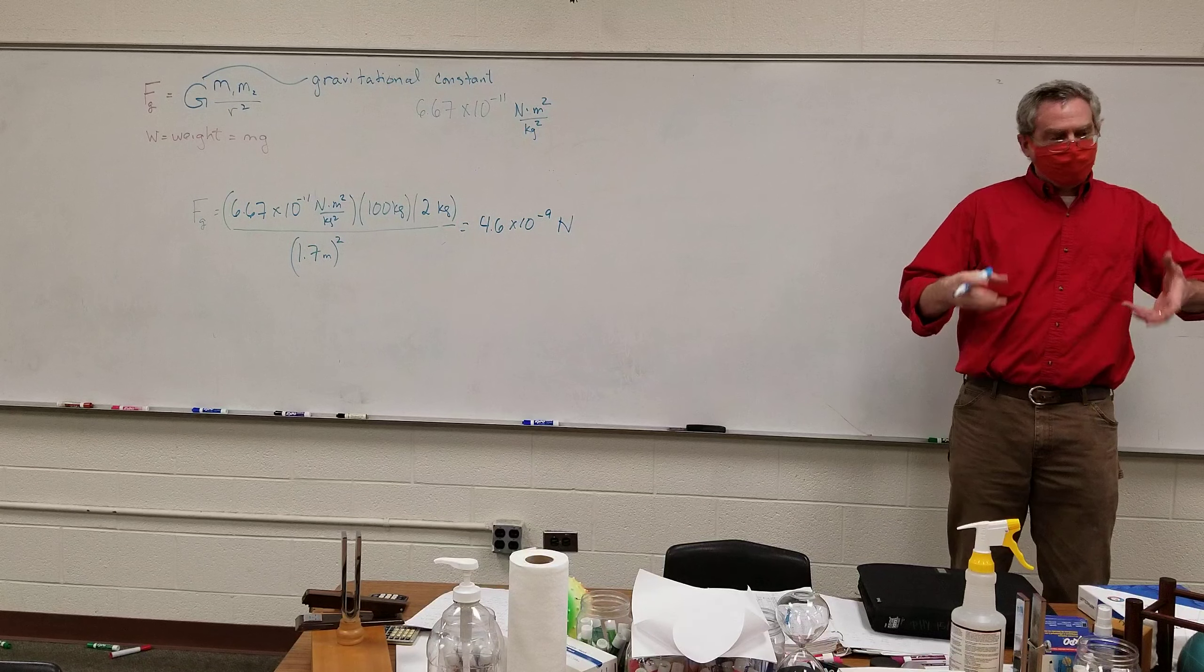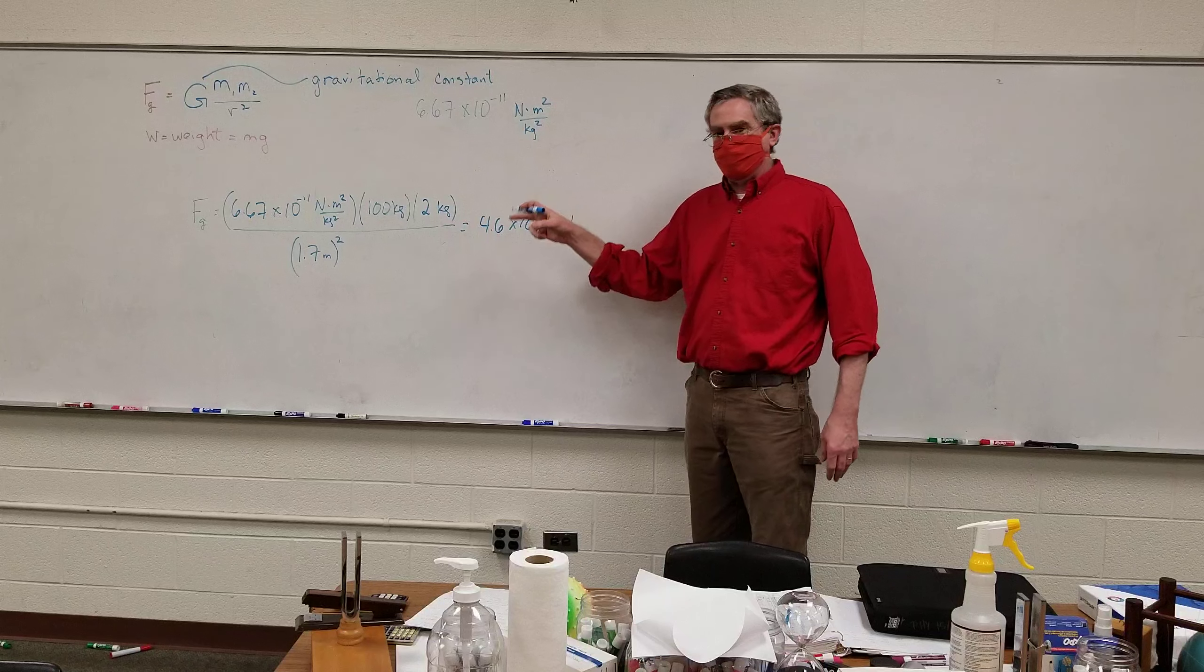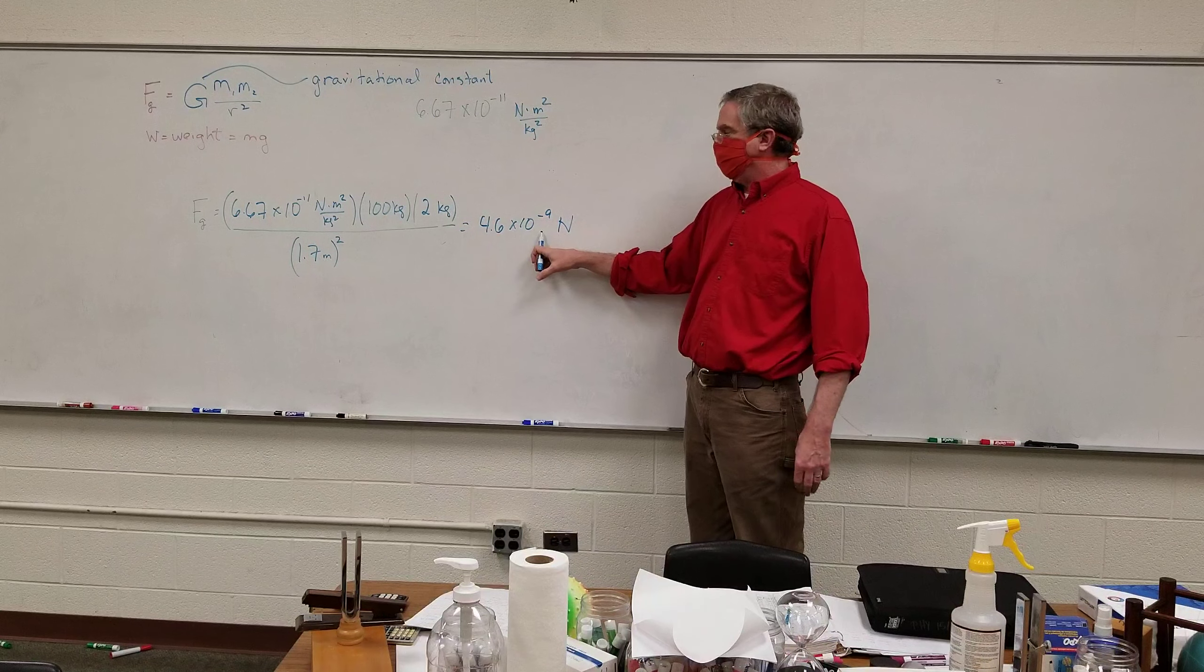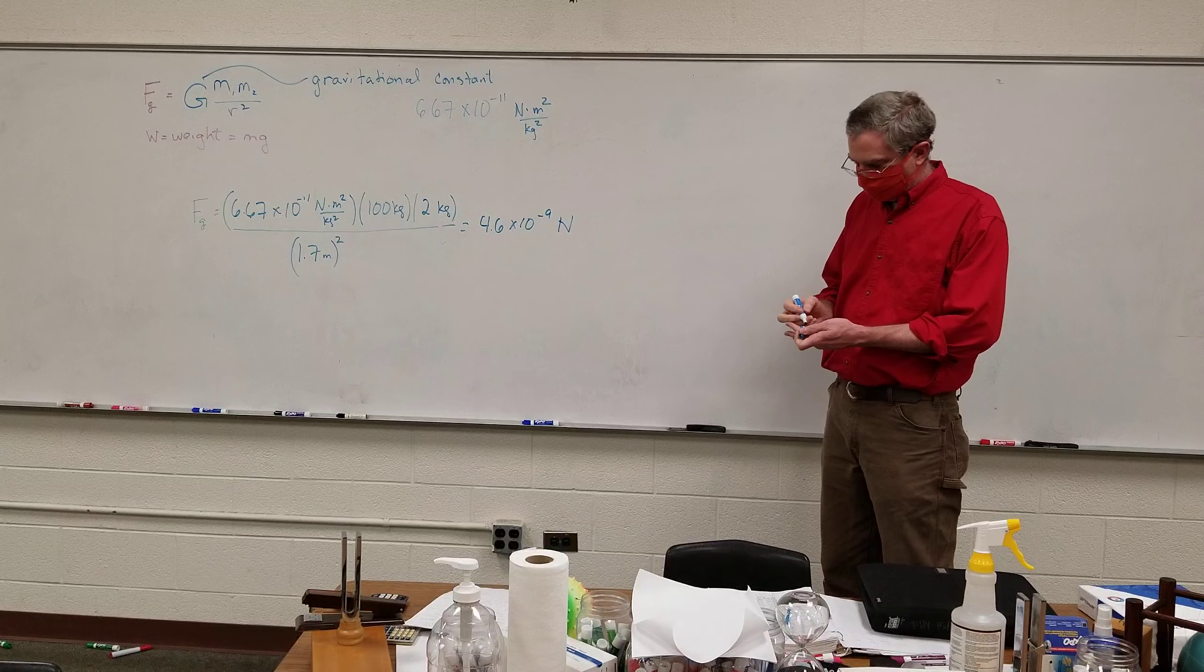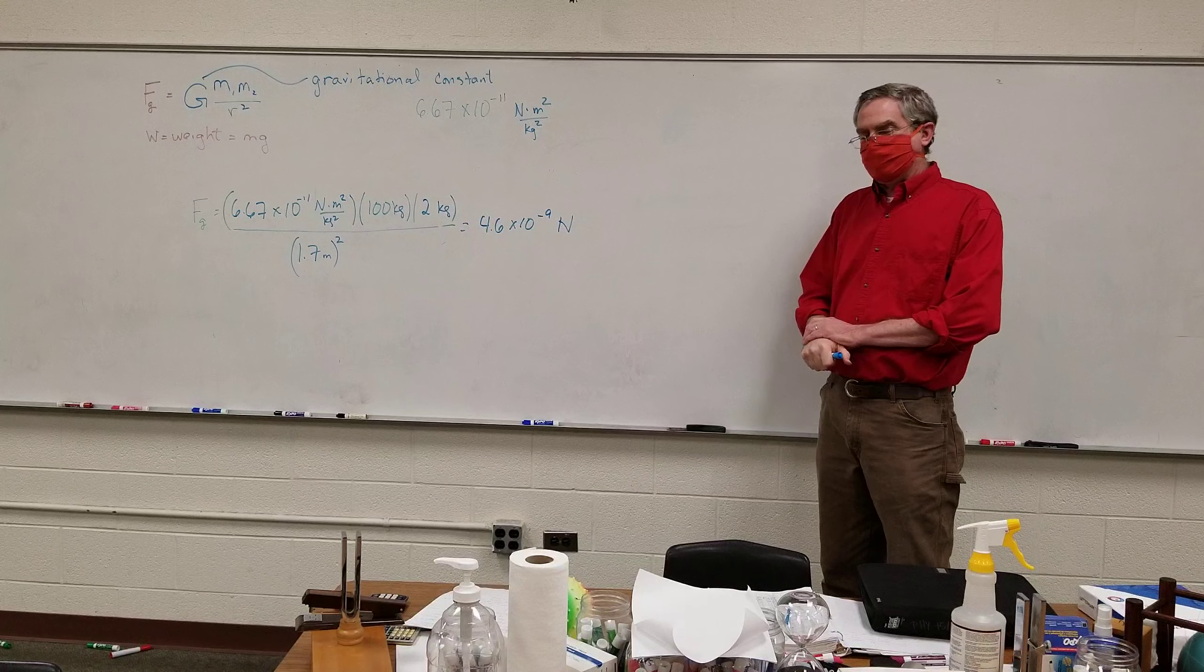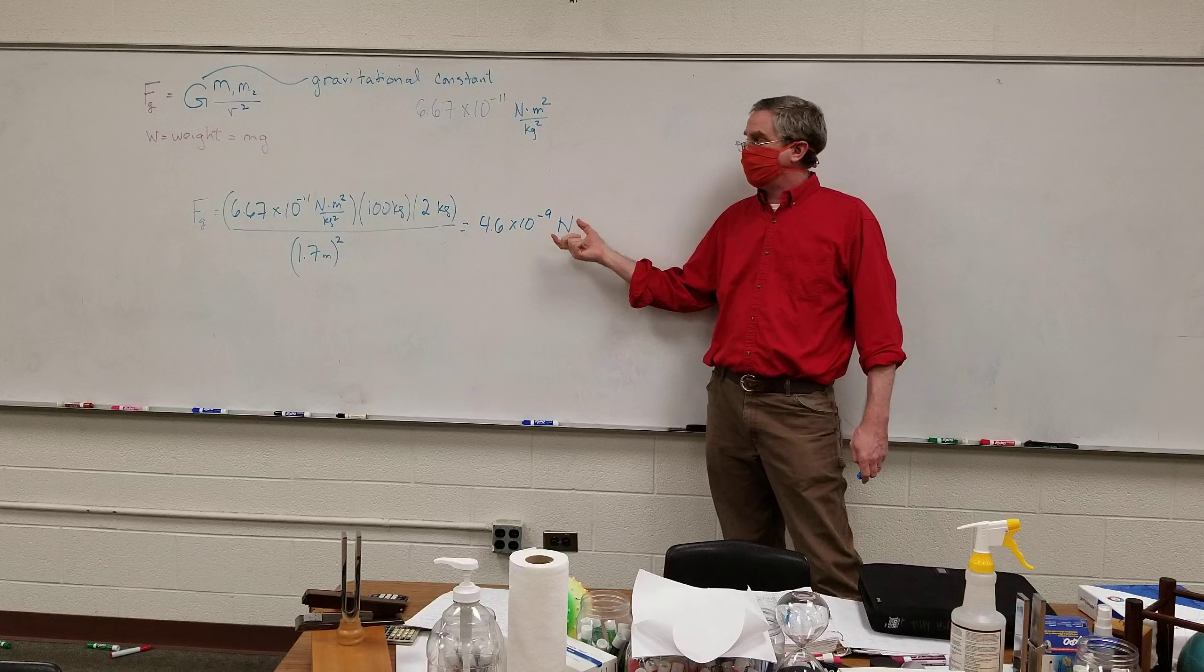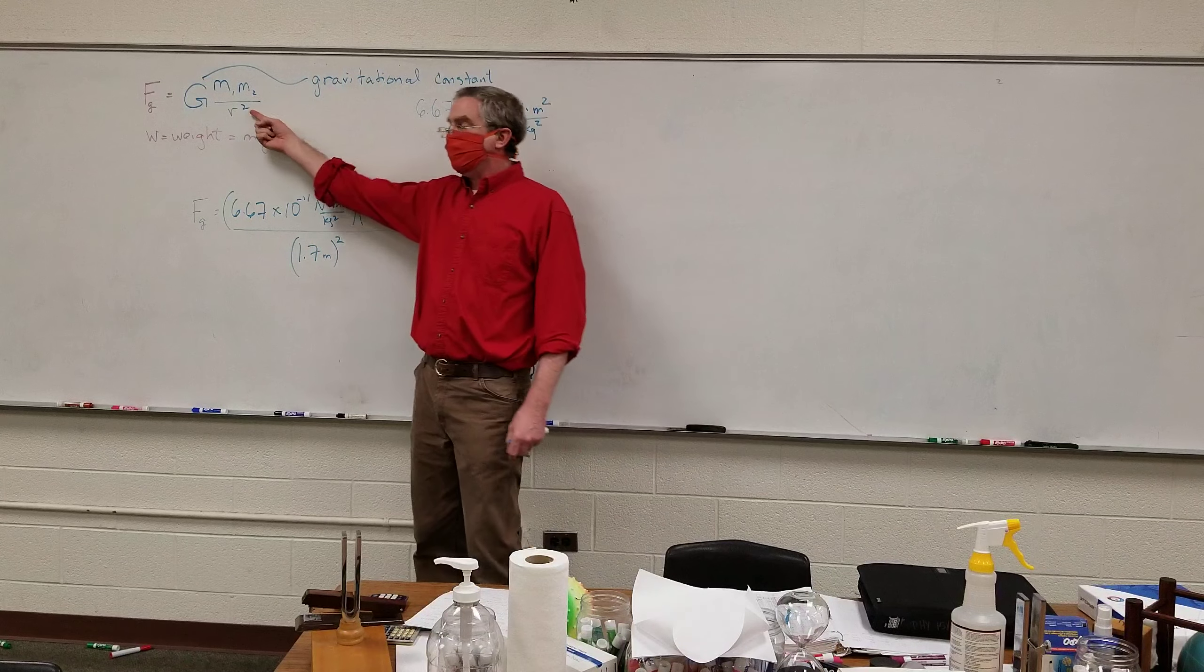So this is why when we do the formal force diagrams, the more complicated force diagrams, we ignore these kind of forces. Because the forces between the smaller objects is only order of a billionth of a Newton. So they are easily ignored. The only people who care about these forces are the ones who are actually doing gravitational experiments. The people who are trying to figure out, is that really a square?